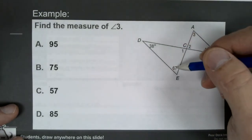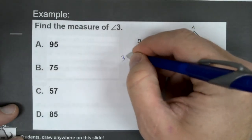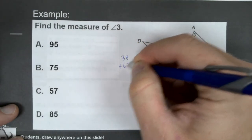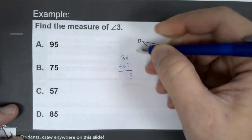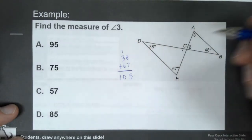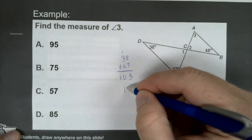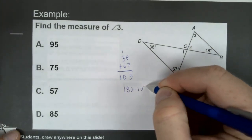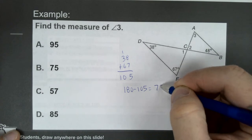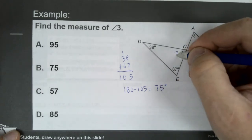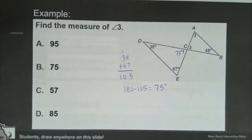So if I take 38 plus 67 and add those together, I'm going to get 105. So to get angle 1, I'm going to take 180 minus 105 to get 75. So I can say that this angle 1 is 75 degrees.